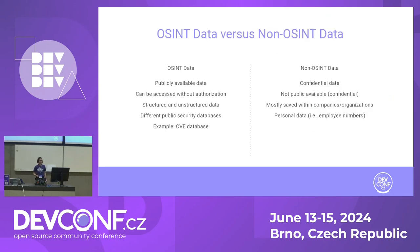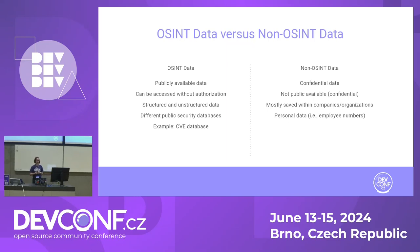Open source intelligence data are publicly available data. They can be accessed without authorization, and you can receive this data in structured and unstructured forms. Unstructured data must be converted to structured data afterwards. There are different public security databases available — the most well-known being the CVE database. Non-OSINT data are confidential data: personal data from companies or banks should not be publicly available and must be kept secure within organizations.